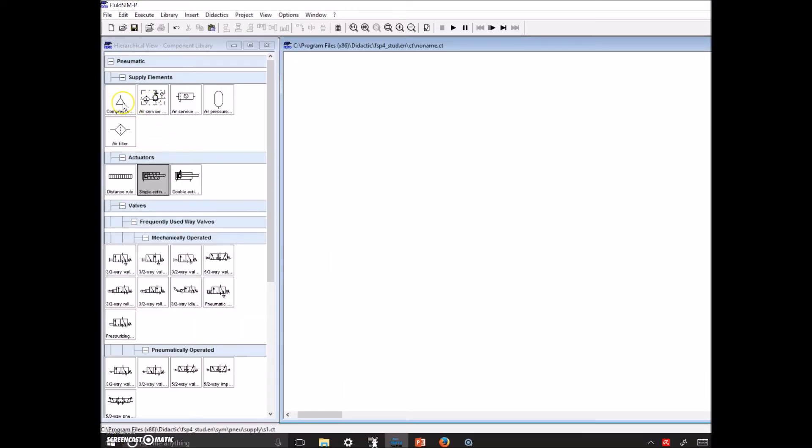Alright, so let's grab all our components for this fluid sim. We'll drop in our compressor. Then we need a single-acting cylinder, just like before. And what do we need? We need a normally open 3-2 valve. So it looks like this guy right here is what we're looking for.